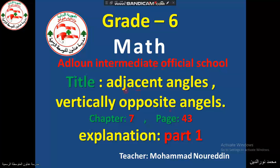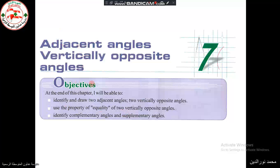Hello grade 6, our lesson today is adjacent angles and vertically opposite angles. In previous years you used to construct an angle and measure the angle using the protractor. This year we are going to define and construct adjacent angles and vertically opposite angles and use their properties. The objectives of this lesson are to identify and draw two adjacent angles, to identify and draw two vertically opposite angles, use the property of equality of two vertically opposite angles, and identify complementary angles and supplementary angles.